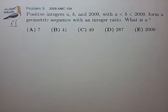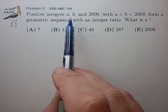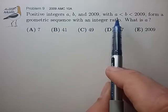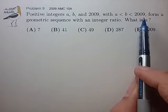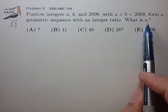Hi, here's an example problem involving prime factors of the calendar year. Positive integers a, b, and 2009, with a less than b less than 2009, form a geometric sequence with an integer ratio. What is a?